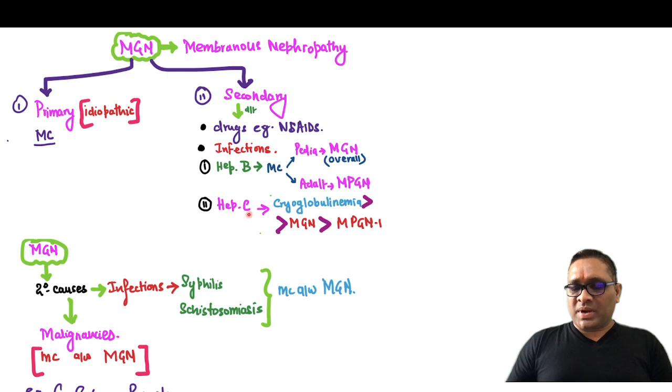When we talk about Hepatitis C infection, cryoglobulinemia is most common, then Membranous, then MPGN type 1.